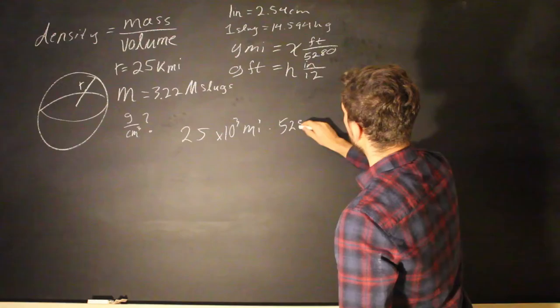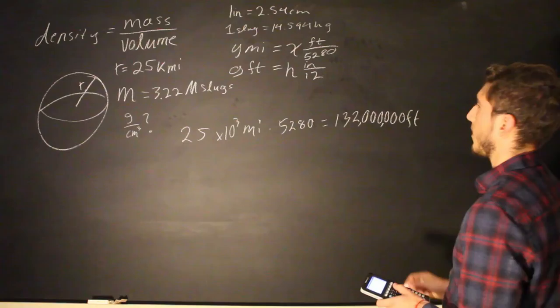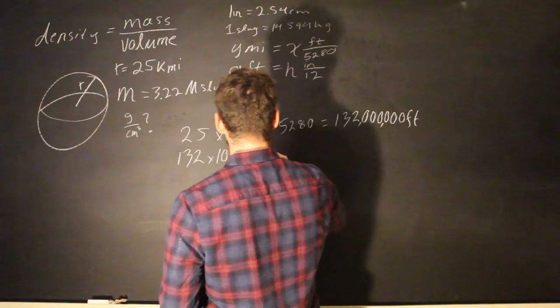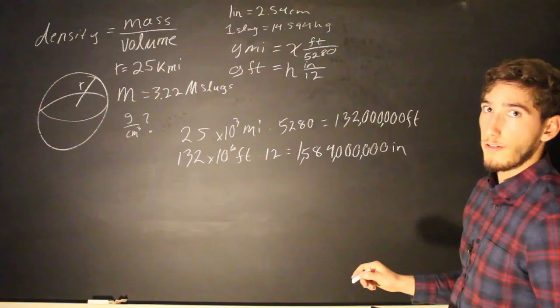And that is equal to 132 million feet, and then to go from feet to inches, we're going to multiply it by 12. So, 132 times 10 to the sixth feet times 12, which is going to be equal to 1,584,000,000 inches. And then to go from inches to centimeters, we're going to use the conversion that we used in the last video.